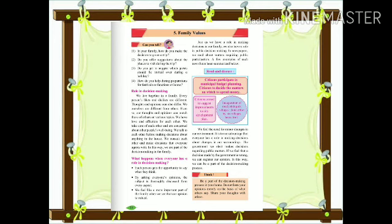The government we elect makes decisions regarding public matters. If we feel that a decision made by the government is wrong, we can register our opinion. In this way, we can be a part of the decision-making process. We have a right to point out to our government if we feel decisions are wrong or causing problems. We can keep our opinion in front of our society.